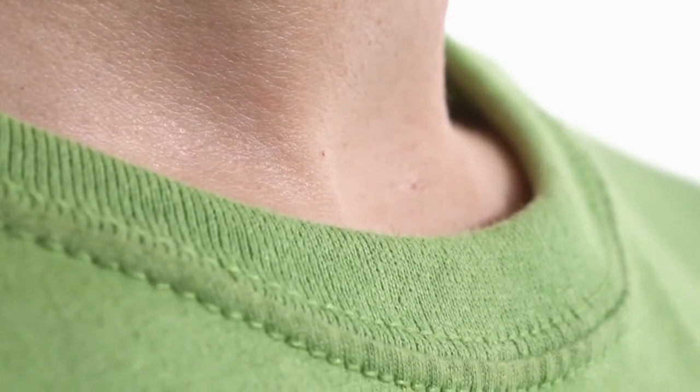The rib neck collar is half an inch thick, so slightly smaller than the unisex version. Both have classic side seam construction.